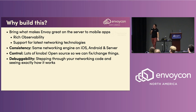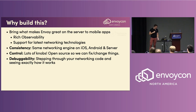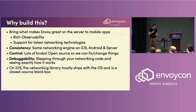Debuggability is another big one. Alternate network engines are closed source — you can't step through the code to understand what's happening when a request is timing out. By having full access to the source code, loading it into the IDE, setting breakpoints, and really introspecting what's going on, you can gain a whole new level of understanding. Those are some of the reasons why it's been helpful to continue to invest in bringing Envoy to mobile.